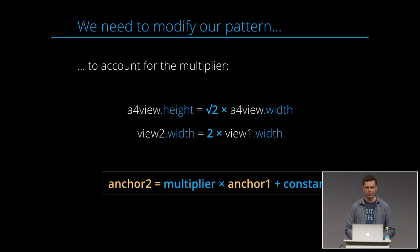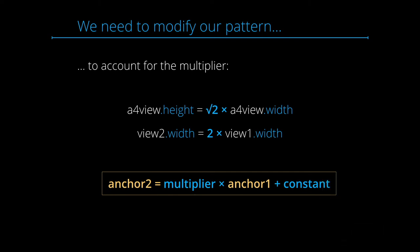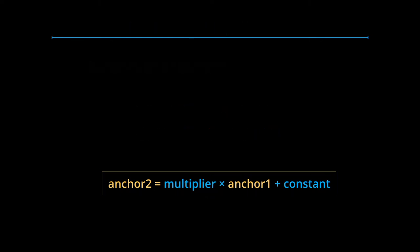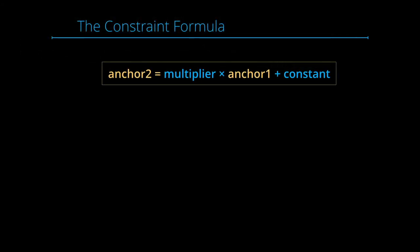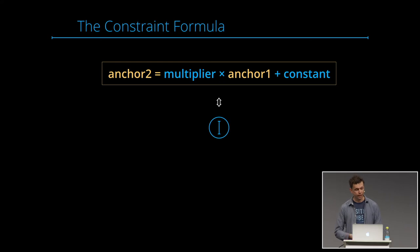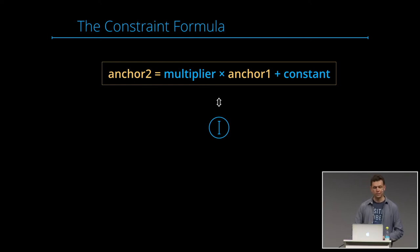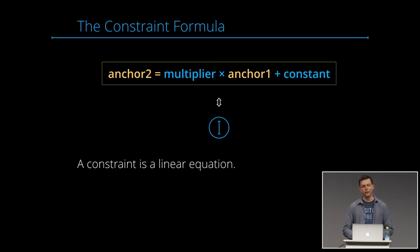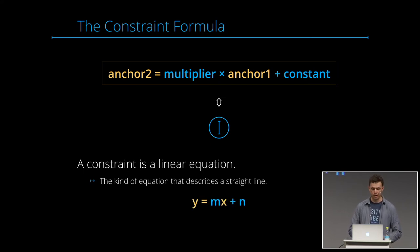Adding the multiplier gives us the final constraint formula. Note that the constant is zero in those two cases — most of the time you either have a multiplier or a constant, but theoretically both can be non-zero. That's actually the final constraint formula, and every single one of those tiny blue lines in Interface Builder represents such a formula. They're called constraints because they constrain the possible layouts. When you add enough constraints, there's only one possible layout — a constraint is a linear equation, the kind that describes a straight line.